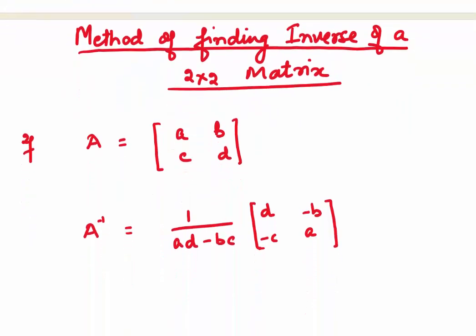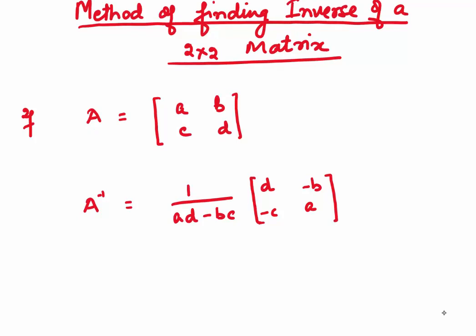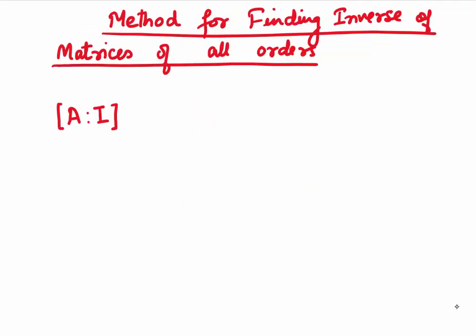The method for finding the inverse of a 2×2 matrix can be done directly — there is a formula. If we are given a matrix of order 2 as [A, B; C, D], then the inverse is 1 over (AD − BC), and we interchange the positions of A and D, and put a minus sign for B and C. This is what you get as the inverse.